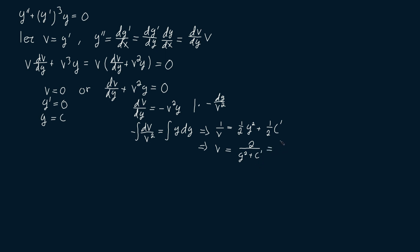Let's then invert this to get that v is equal to two over y squared plus c prime. Now, v was just y prime, or dy dx. Now, this here is a first-order ordinary differential equation, where y is the dependent variable and x is the independent variable.